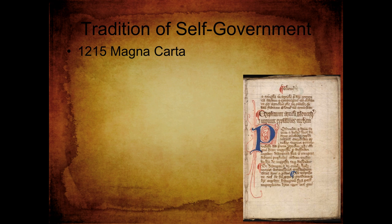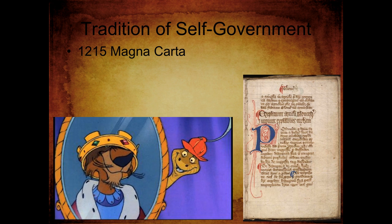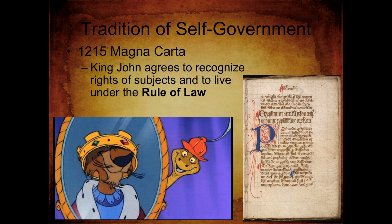We're looking at traditions of self-government. The first self-government idea is the Magna Carta, which was passed in 1215. This was an English document that basically got King John to recognize his subjects and to live under a rule of law. Before this time, kings could pretty much do whatever they wanted with no documents saying what they could and couldn't do. This document is huge as a step forward to a democratic republic — it allowed the people to create a document that limits the king's power.